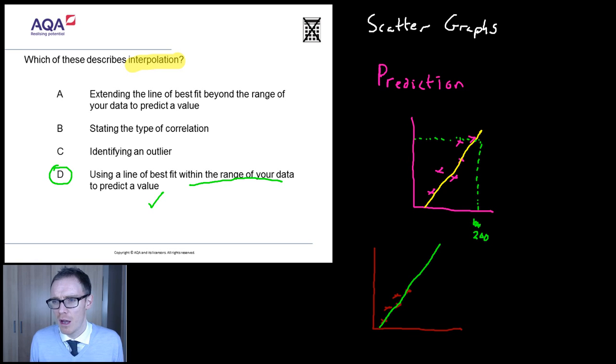There it goes. But you were then asked to predict a value up here. Now, that is not within the data. Your data is just around there. So, whenever you're asked to predict something outside of the range of your data, you're doing something different. Something a little bit dodgy.